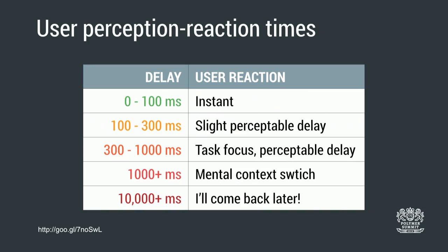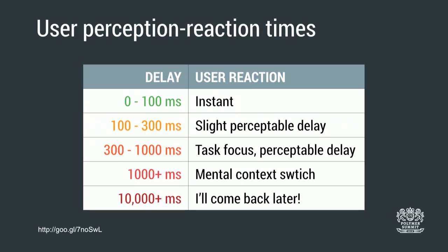Paul Irish showed this table of user interaction timings. The moral is that 250 milliseconds is the sweet spot where users feel your app is fast. If you go above 100 milliseconds — a tap takes too long, something janks — you start to lose people; they do a mental context switch. By 10 seconds, you should basically just give up and try something else.